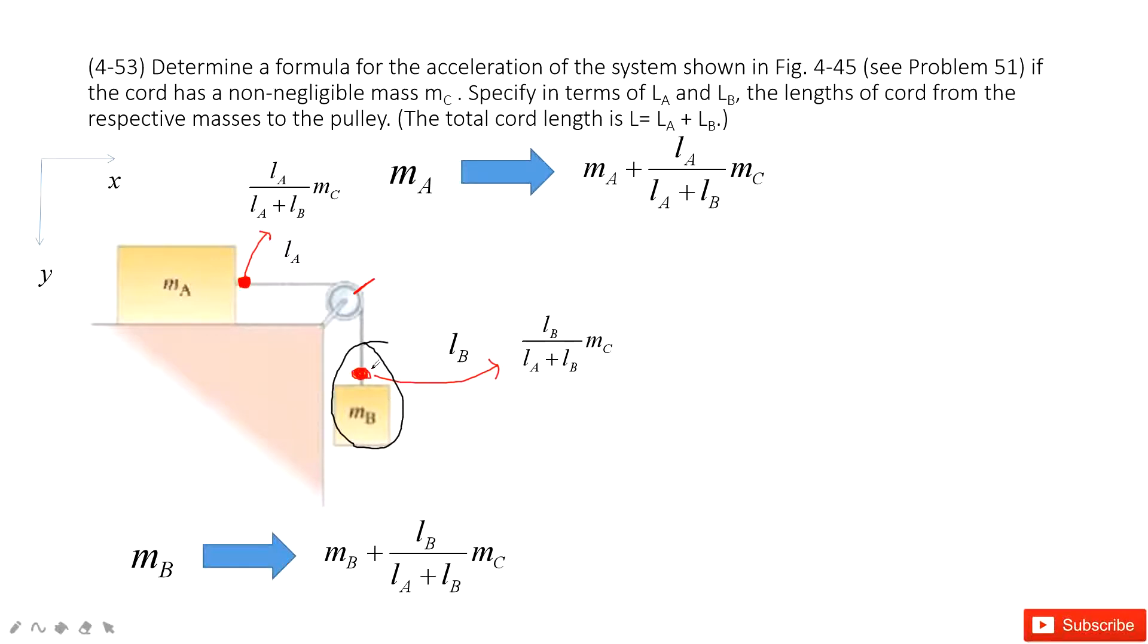So we can see, we consider this weight in two parts: MB plus this fraction of MC. We consider this one as a system, as an object. And this one, we consider them as a total. And then these two, just the mass A needs to change to mass A plus the fraction times mass C.